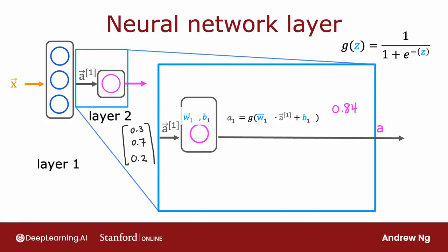So a^[1] is this vector [0.3, 0.7, 0.2] that we just computed. Because the output layer has just a single neuron, it computes a subscript one — the output of this first and only neuron — as g, the sigmoid function, applied to w subscript one dot product with a^[1] plus b1. This is the familiar quantity z, and g is the sigmoid function applied to it.